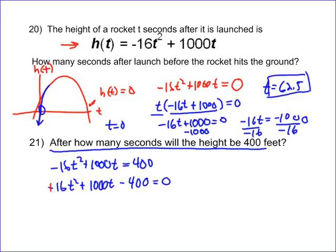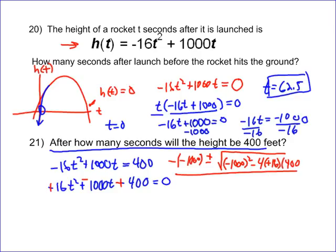To start, I'm going to change all these signs by dividing by negative 1, because I think it'll be easier. So you're going to have negative b, which is negative 1,000, plus or minus the square root of b squared — so 1,000 squared — minus 4 times a, which is 16, times c, which is 400, all over 2 times a, which is 16.